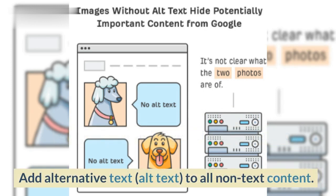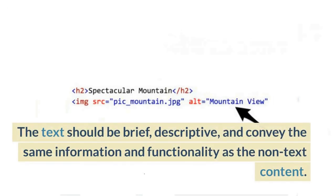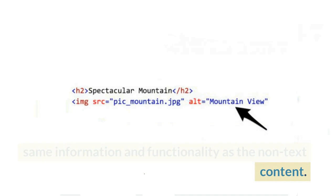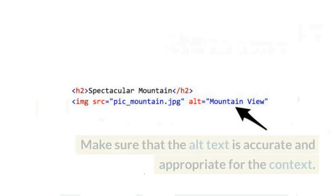Add alternative text (alt text) to all non-text content. The text should be brief, descriptive, and convey the same information and functionality as the non-text content.